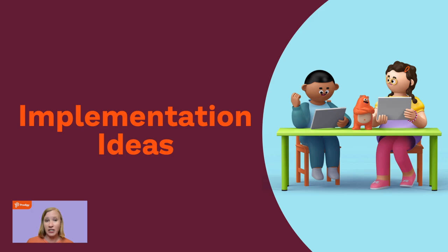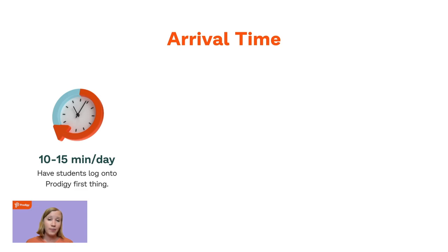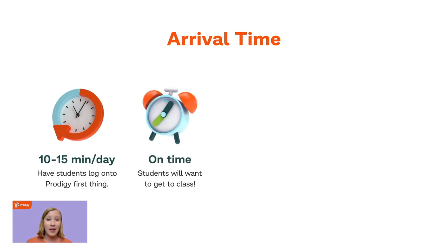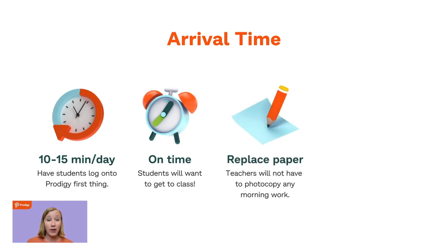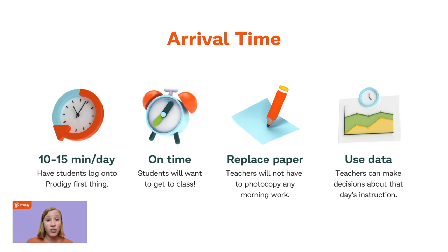Let's talk about some implementation ideas — how do you use Prodigy beyond Fun Friday or just centers? You can use Prodigy during arrival time, about 10 to 15 minutes a day, having students log on first thing. This means students will arrive on time because they want to get to class, with less fooling around in hallways and fewer late arrivals. You can replace paper morning work, eliminating photocopying, and alternate math and English or use specific subjects on certain days. You can also use the data each morning to inform your instruction for that day.